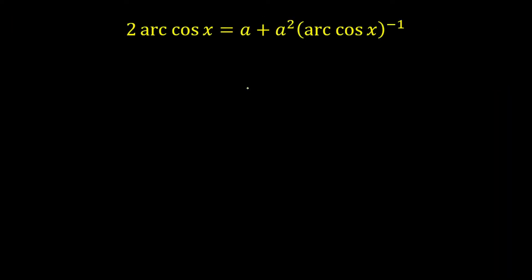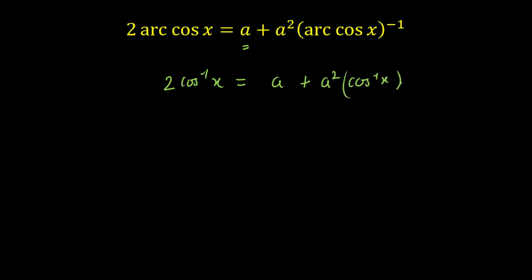Let's start. The question is not too difficult and not too lengthy — it's very short and you can solve it within minutes. But I guarantee that most of you will get the wrong answer. So feel free to pause the video and try this question. Our given equation is 2·cos⁻¹(x) = A + A²·(cos⁻¹(x))⁻¹.